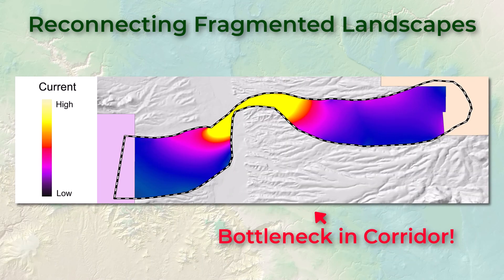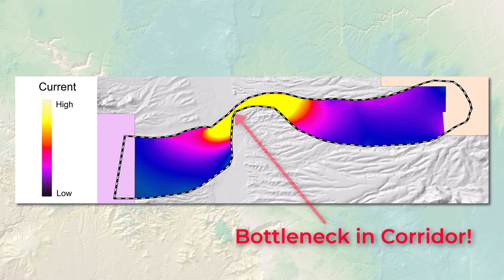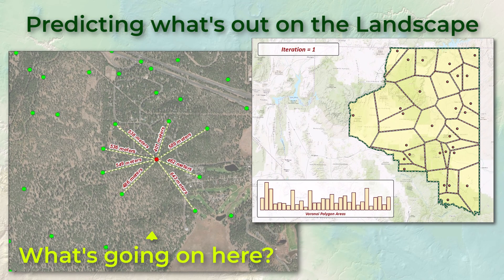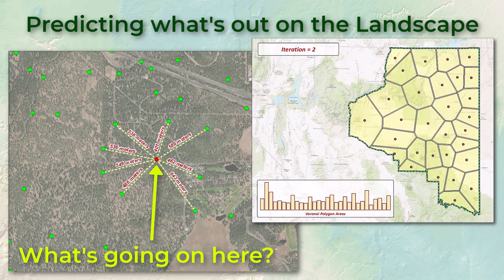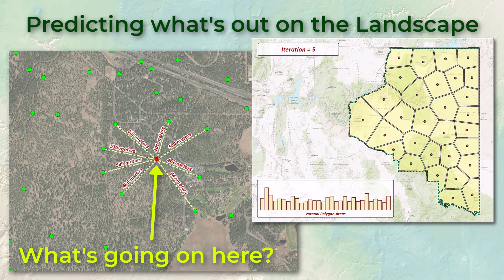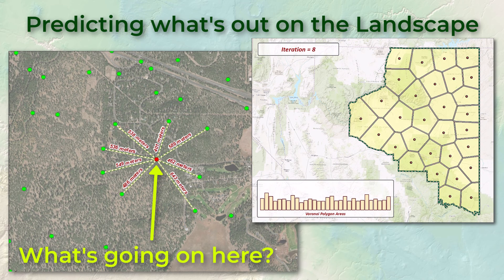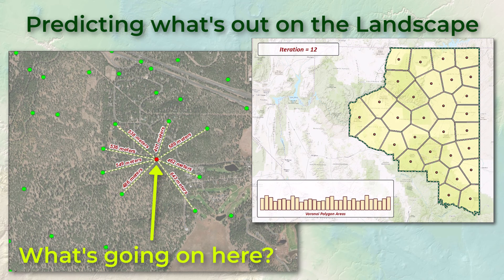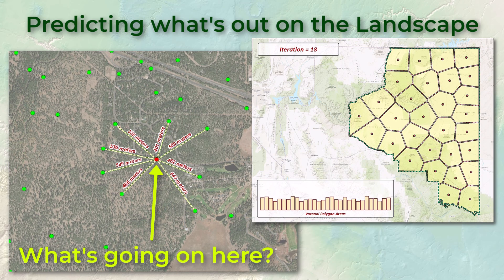We want to see where bottlenecks to gene flow occur. These bottlenecks can stop individuals from a species from crossing through, isolating the subpopulations on either side of the corridor. These isolated populations are a lot more likely to suffer and eventually die out, so finding these bottlenecks helps us to effectively reconnect these populations. We're interested in predicting what conditions might be in one location based on observed conditions in neighboring locations. This helps us to understand the landscape and to predict how species may behave there. This kind of analysis helps to determine critical habitat to preserve in order to protect endangered species.